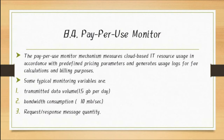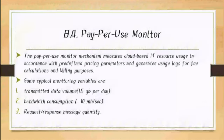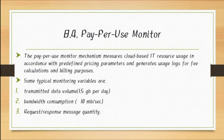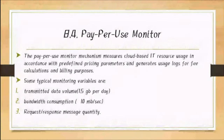Then next, the request and response message quantity — how many numbers of data messages you can send. A simple example: in a smartphone, in previous times when technology was limited, a recharge scheme might offer 100 messages per day. So request and response quantity means how many messages you sent as data, and how many responses you received. Accordingly, this can be used for billing purposes in Pay Per Use Monitoring.